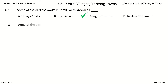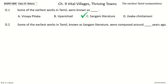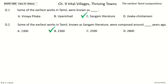Question 2. Some of the earliest works in Tamil, known as Sangam Literature, were composed around blank years ago. The options are: 1300, 2300, 2500, 2800. The answer is 2300. Sangam Literature was composed around 2300 years ago.